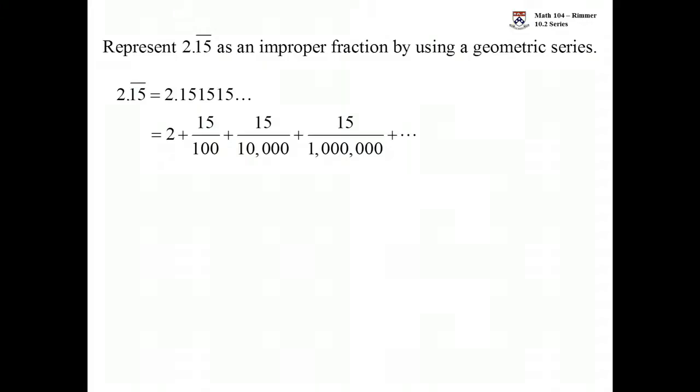So, 15 is over 100. The next 15 would be over the 10,000 because it's the fourth decimal place behind the decimal point. The next 15 will be over a million and so on. This pattern will continue.